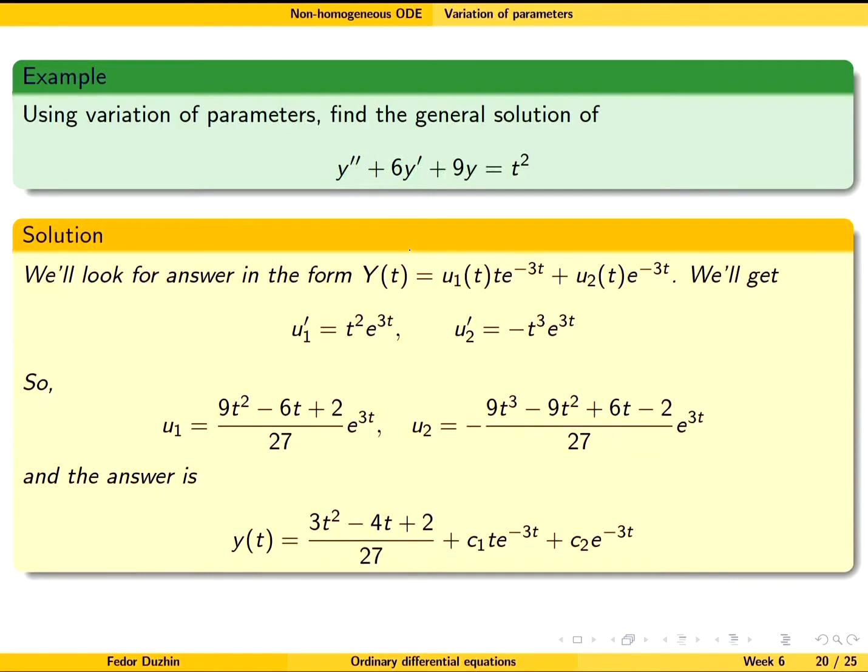Let's look at our example again. Here is the differential equation that we just solved. The method of variation of parameters is to look for the answer in the form where the right hand side is a combination of solutions of the corresponding homogeneous differential equation with coefficients that depend on t.